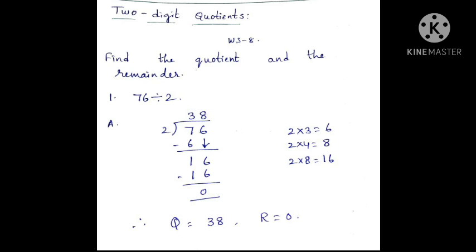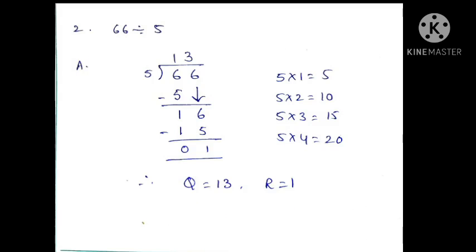The quotient is 38 and the remainder is 0. Second question: 66 divided by 5.